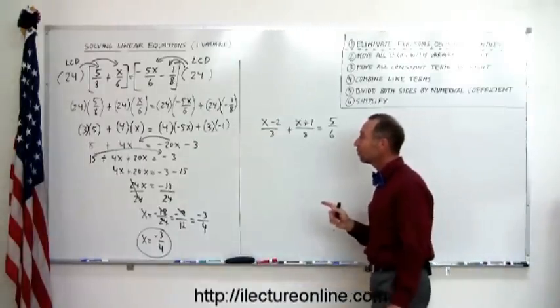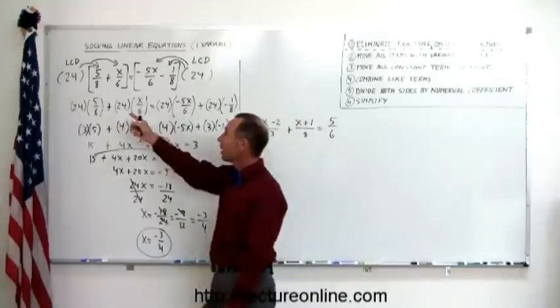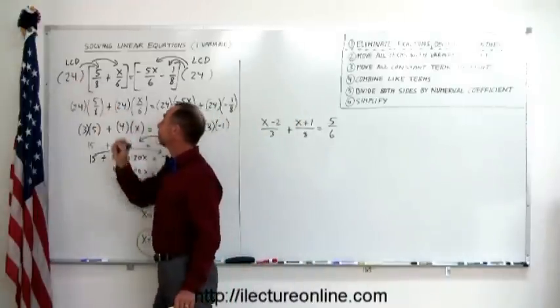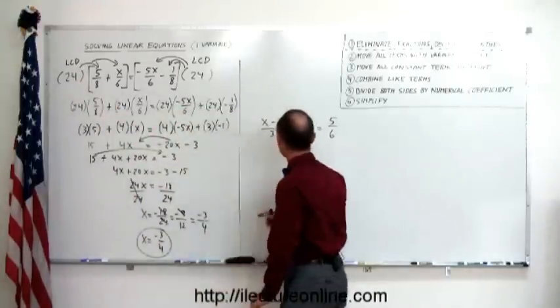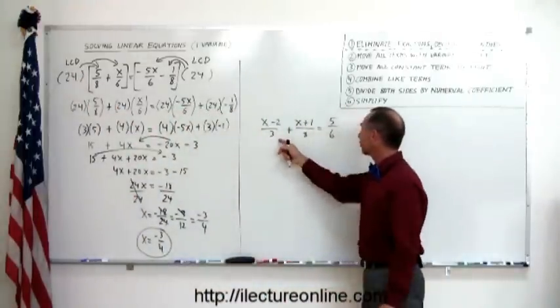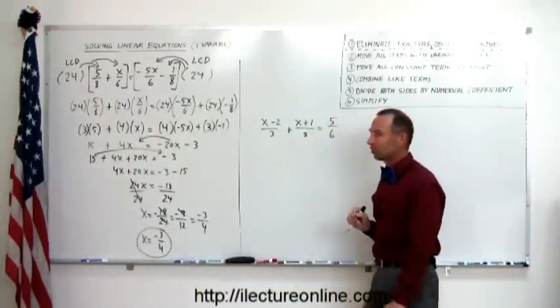When we have fractions, we look for the lowest common denominator. So what is the lowest common denominator of 3, 8, and 6?